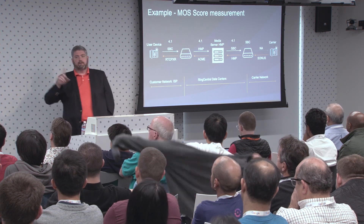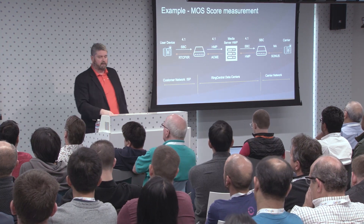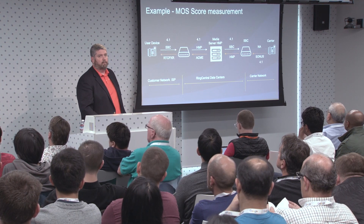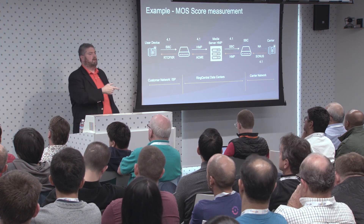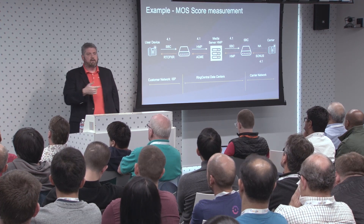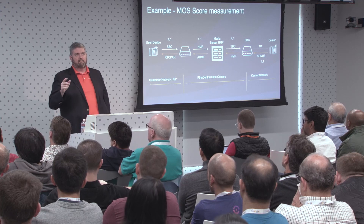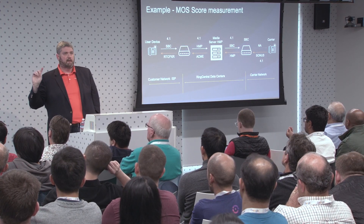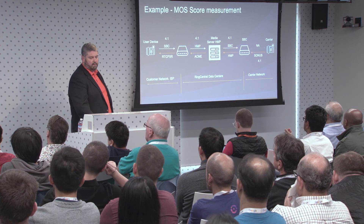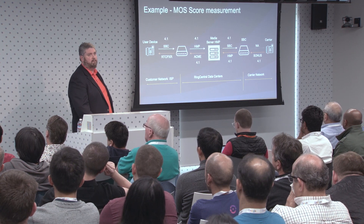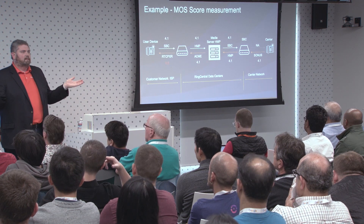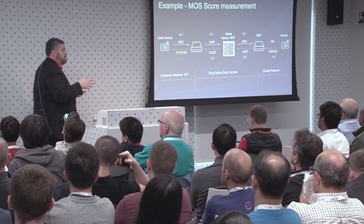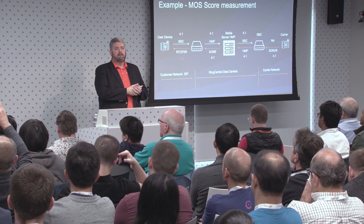The call goes out to a carrier endpoint. Our SBC scores it 4.1 again. The NA on the other side is because unless the carrier supports returning a MOS score, you don't get an answer — about 50% of carriers do, 50% don't. Coming back through the same SBC and HMP, the phone reports a 3.5. So either there's a problem with the downlink segment on the customer's network, or we have a mismatch in MOS scores.